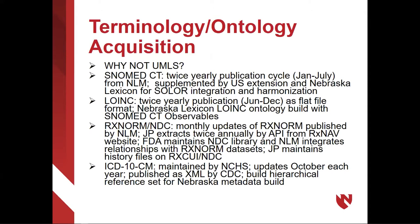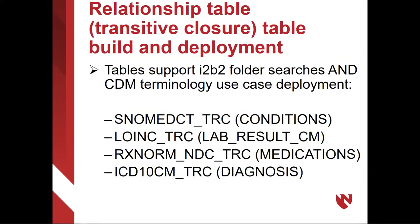LOINC is published twice a year by Regenstrief Institute — it's a flat file with no ontologic features of substance, but in our build we do deploy a full ontology of LOINC. RxNorm is published monthly by the National Library of Medicine. One of our staff, Jay Pedersen, has spent a lot of time building APIs to NLM RxNav to grab current and historical RxNorm data. We have worked with the FDA archives to basically build a history file for NDC codes. ICD-10-CM is published by NCHS, comes out with updates in October, and we use the XML release from the Center for Disease Control.